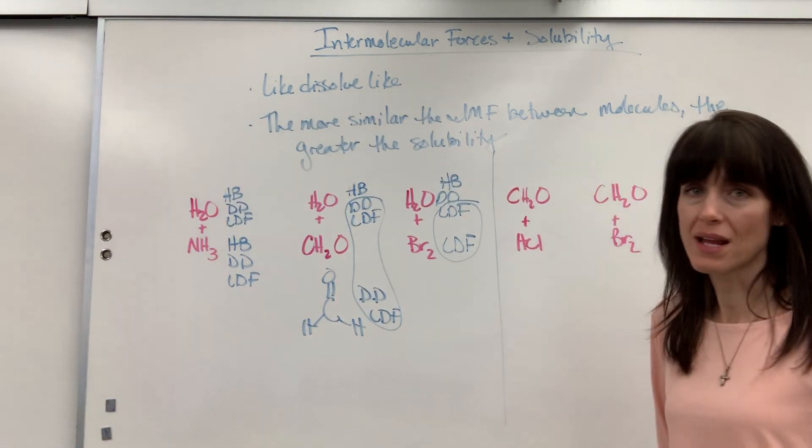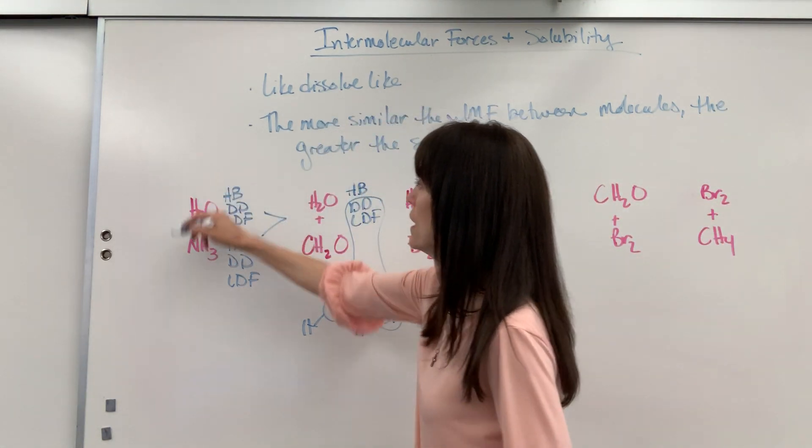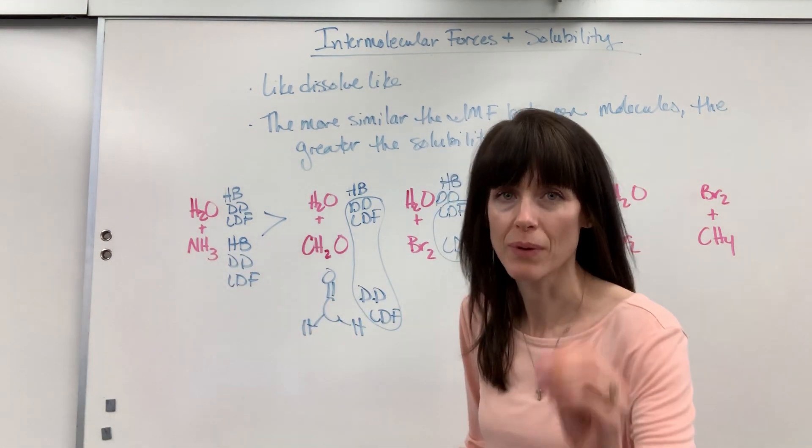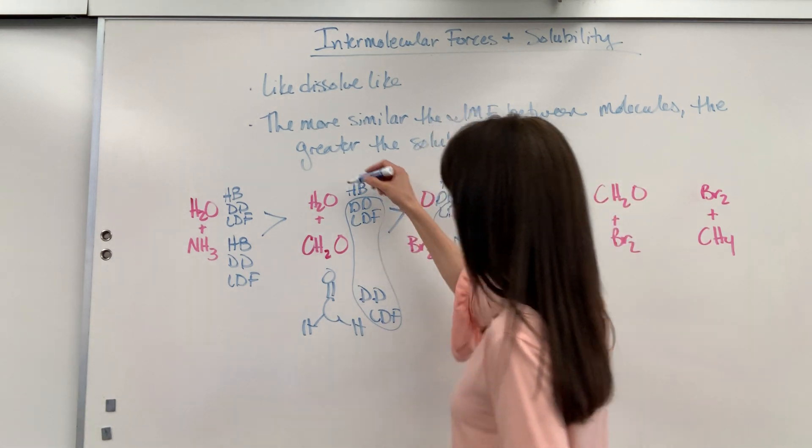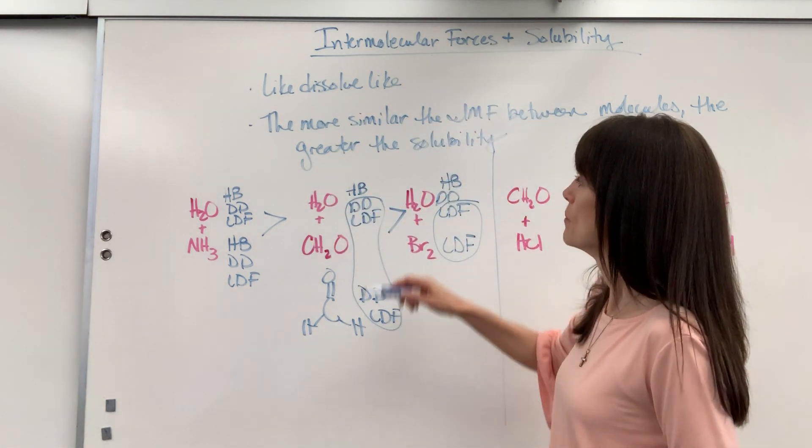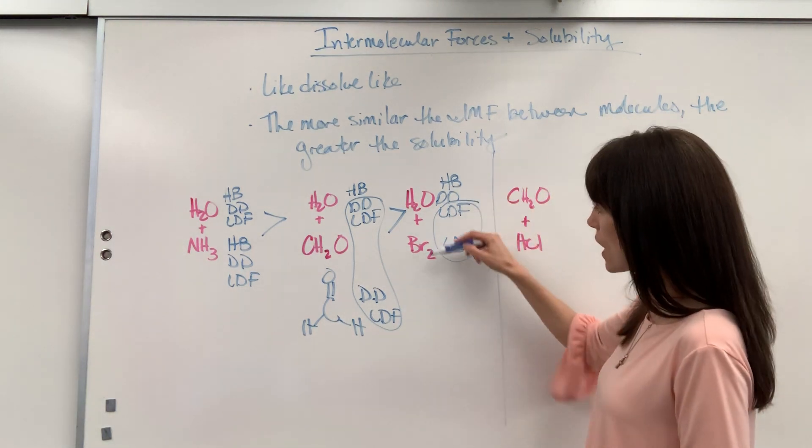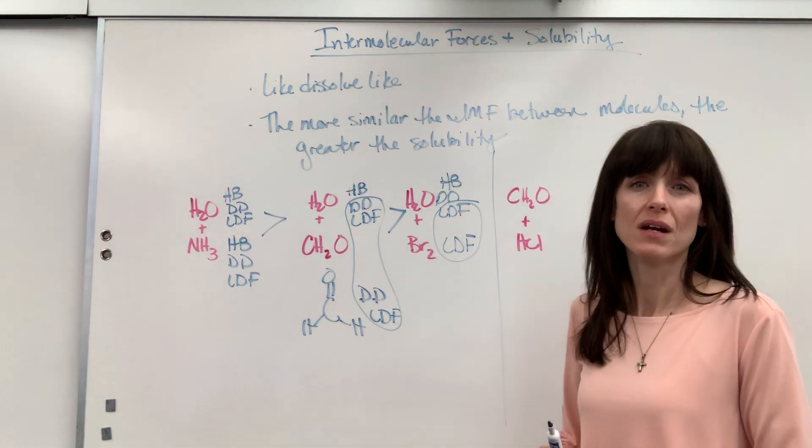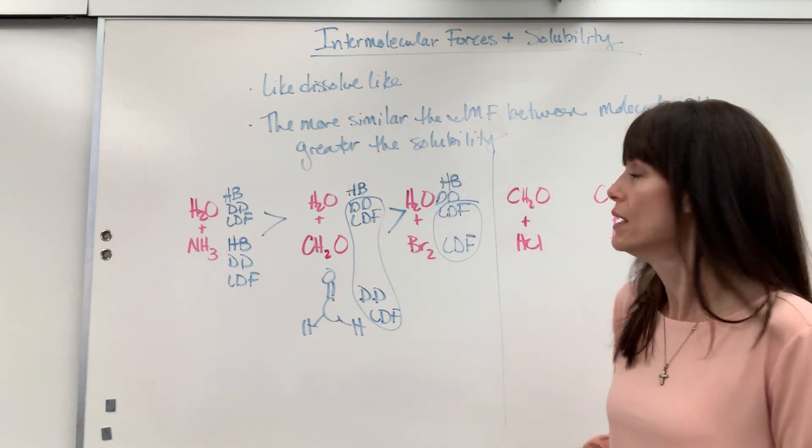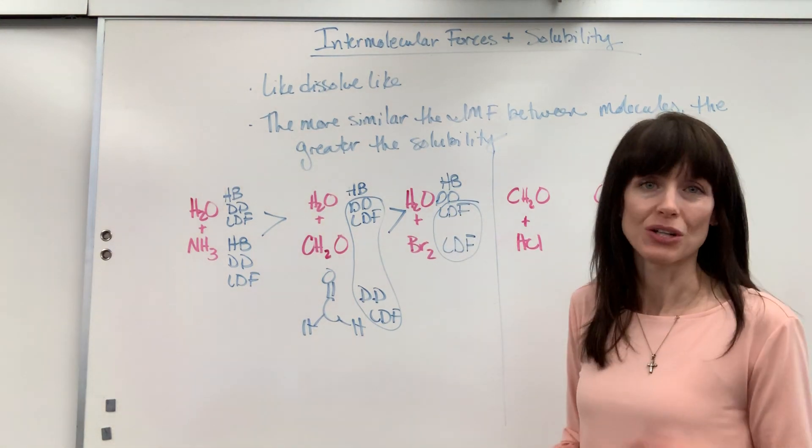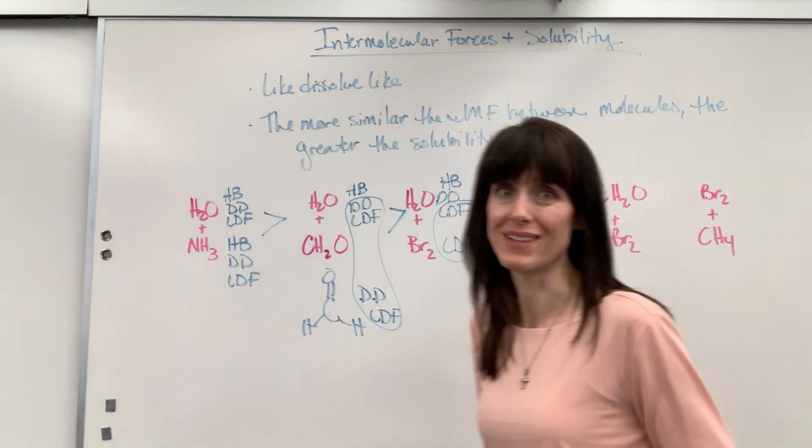Undoubtedly the greatest solubility is the water and ammonia because they both have hydrogen bonding, dipole-dipole, London dispersion. Next would be my water with this aldehyde because it has dipole-dipole and London dispersion similarity. And then the least soluble combination would be the water with that bromine. This would have to be a dipole-induced dipole. The water would create a dipole, and so it's not going to dissolve as much of that bromine. Okay, so there's one set of examples.